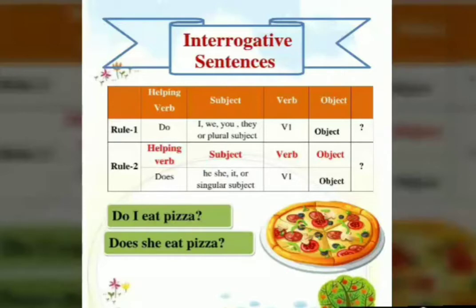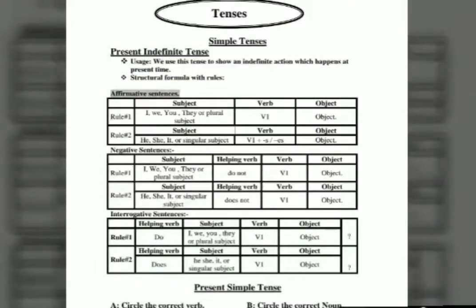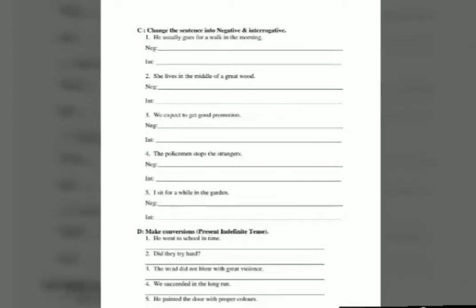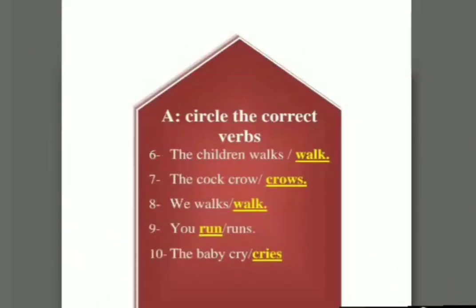In your summer task, some activities are given as well. You can see these pages in which all the definitions and structure formulas are given, and then some activities. Have a look at the first activity — we will have to circle the correct verb. The children walk or walks — correct answer is walk. The cock crow or crows — correct answer is crows. We walks or walk — correct answer is walk. You run or runs — correct answer is run. The baby cry or cries — correct answer is cries. You will have to circle all the correct verbs.